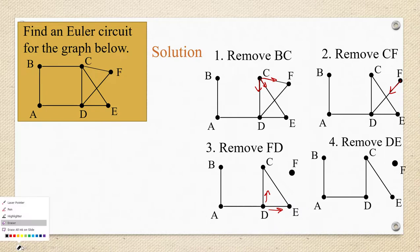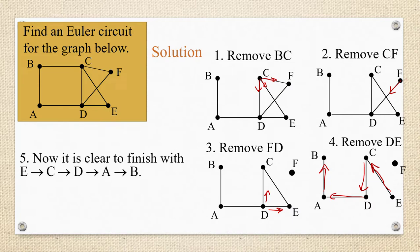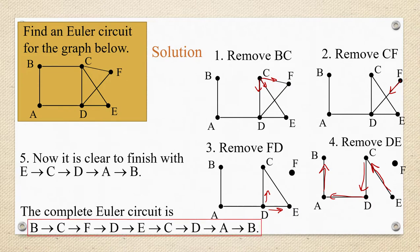Now from vertex E the rest of the path is laid out for me. There are no options. I'd have to go to from E to C and then to D and then to A and then back to B. So the complete Euler circuit that started at B would be B to C to F to D to E to C to D to A to B.